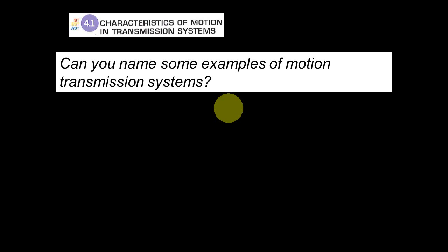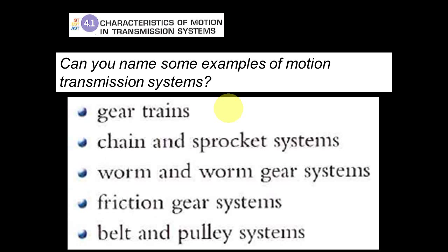So belt and pulley. Worm and gear. What else? Chain and sprocket. What else? So gear trains, which is a combination of many gears. Chain and sprocket systems. Worm and worm gear systems.